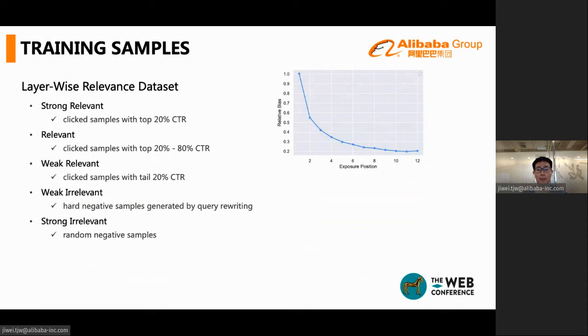As for the negative samples, the most straightforward is random sample negatives. When applied online, the relevance model will face samples more or less relevant. The random negatives do not help much to distinguish these hard negative samples. To address this problem, we introduce more difficult samples, and we name as weak irrelevant. The weak irrelevant samples are generated with the help of query rewriting model.